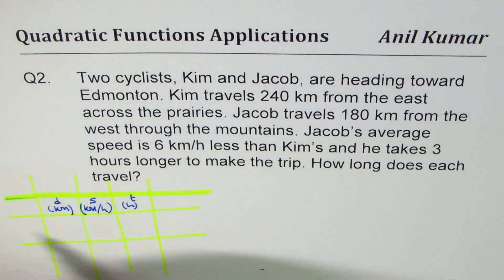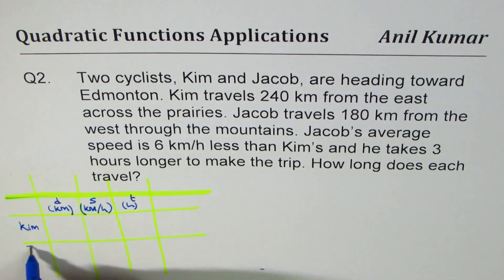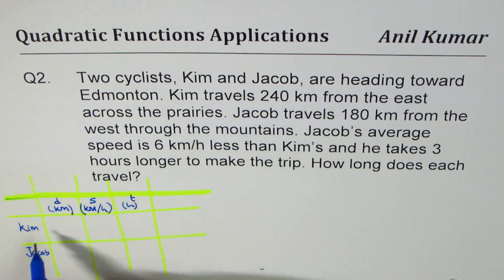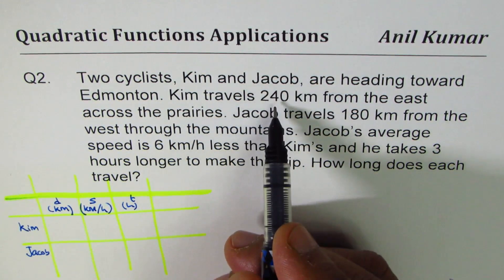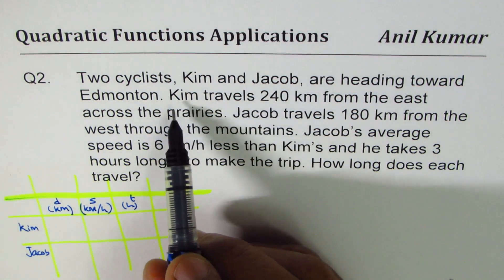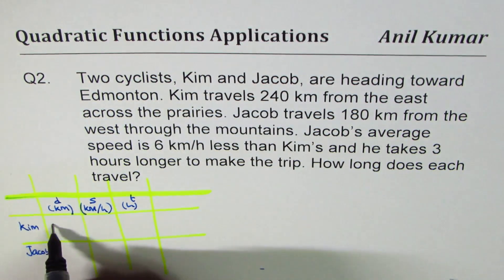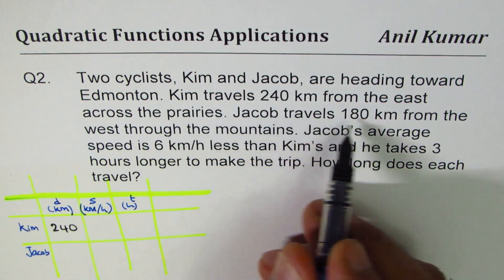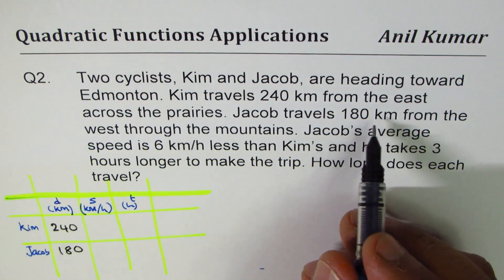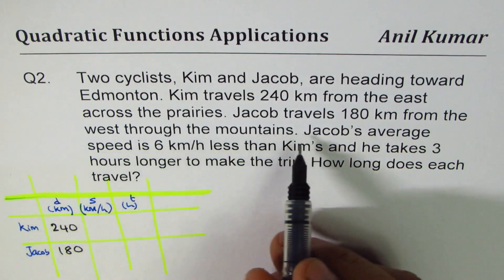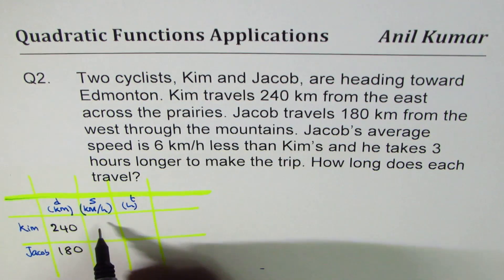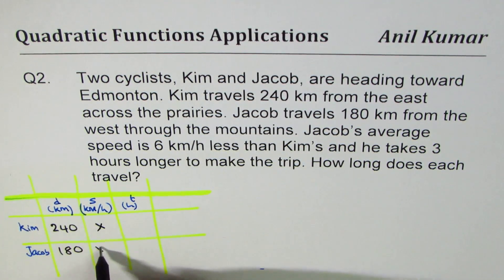Two cyclists: Kim and Jacob. Kim travels 240 kilometers, so this distance is 240. Jacob travels 180 kilometers, so this is 180 kilometers. Jacob's average speed is 6 kilometers per hour less than Kim's. That means if Kim's speed is x, Jacob's speed is x minus 6.